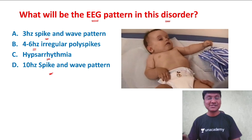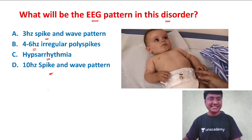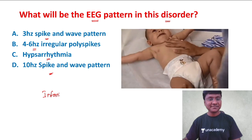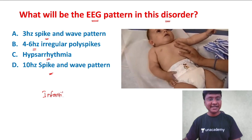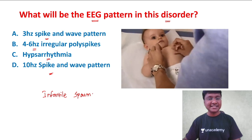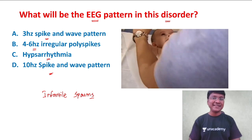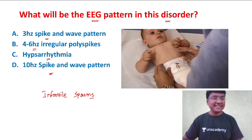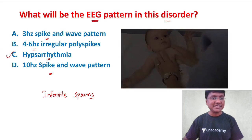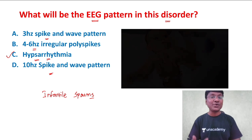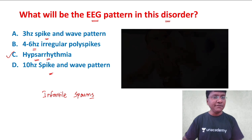What are these? These are nothing but infantile spasms. The abnormality you are seeing is infantile spasms. So in infantile spasms, what will be the EEG pattern? The pattern in infantile spasms will be hypsarrhythmia, which we call the chaotic pattern.